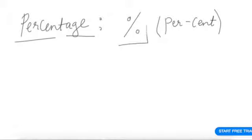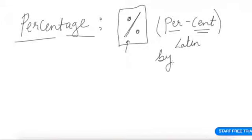It is generally denoted by this sign - a slash and two zeros (%). It's a Latin word called per cent, it also means by hundred. Let us see what we're trying to say when we say 5%. Percent would mean by hundred, 5/100.